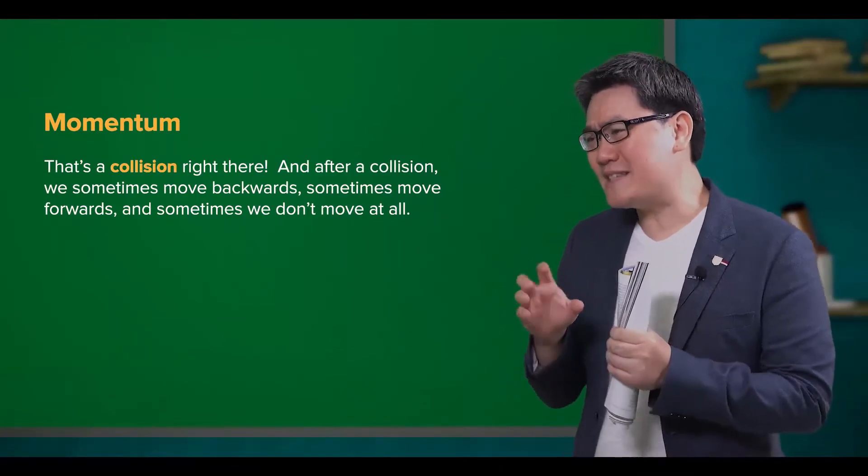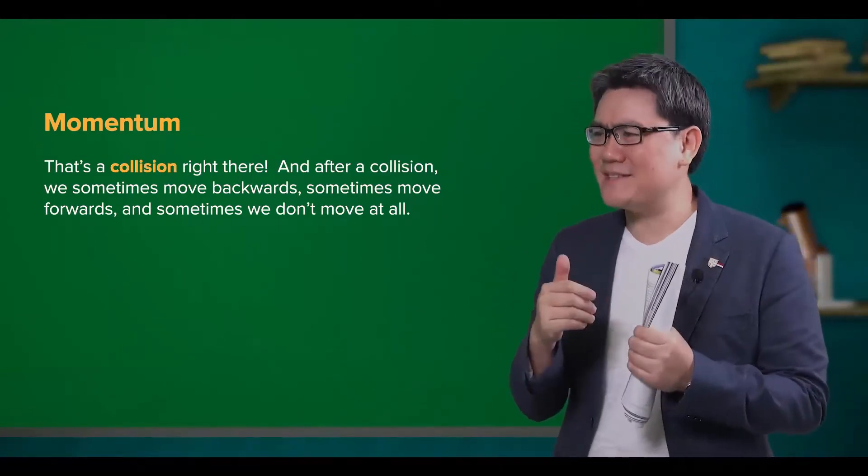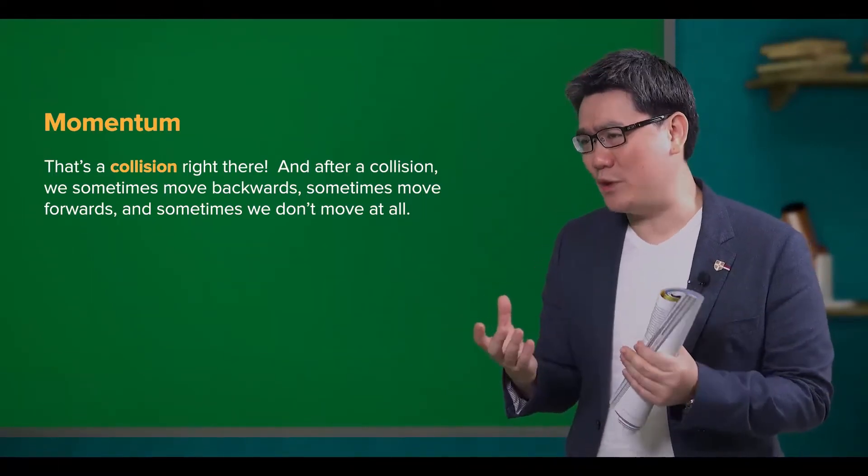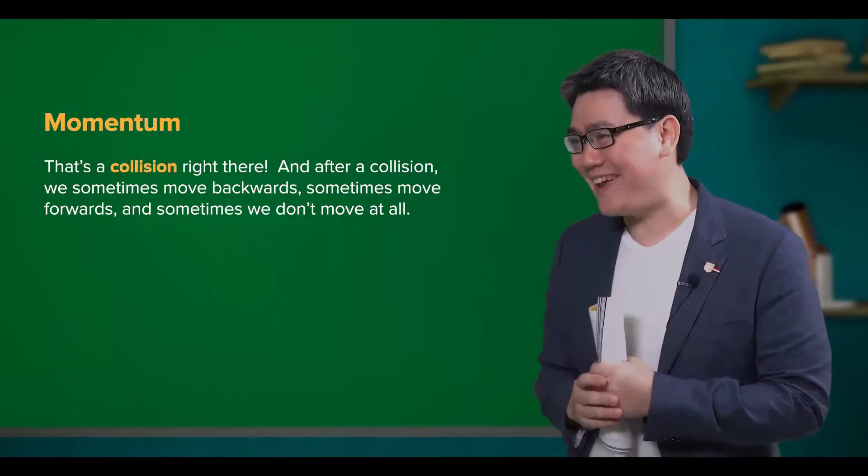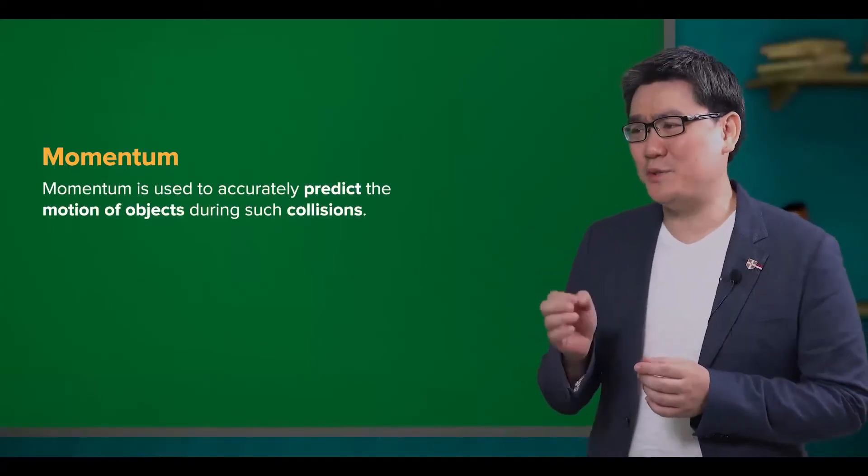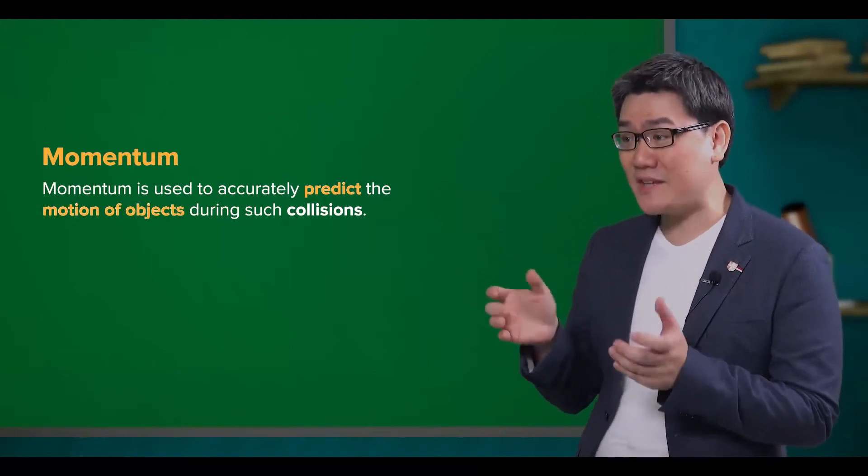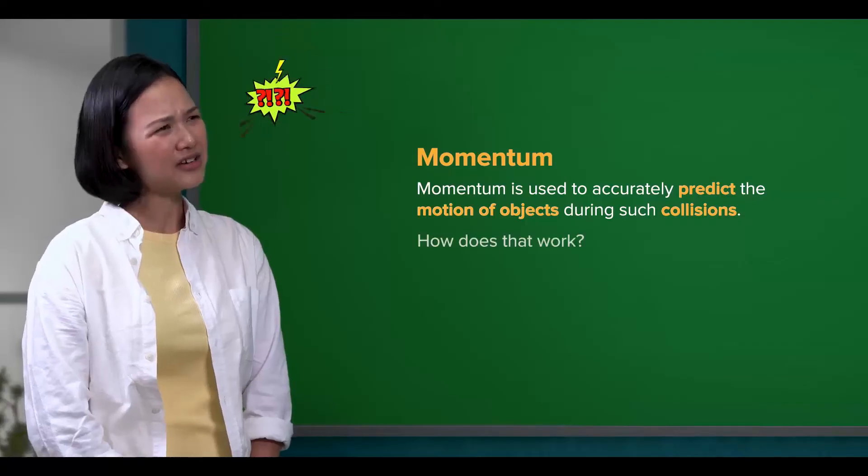And after a collision, we sometimes move backwards, sometimes forwards, and sometimes we don't move at all. Remember that? Yes. Momentum is used to accurately predict the motion of objects during such collisions. How does that work?